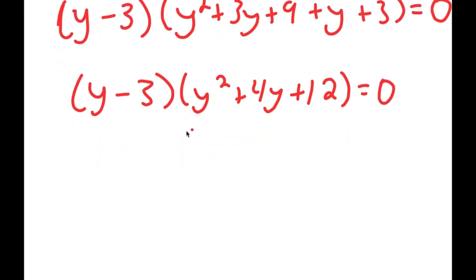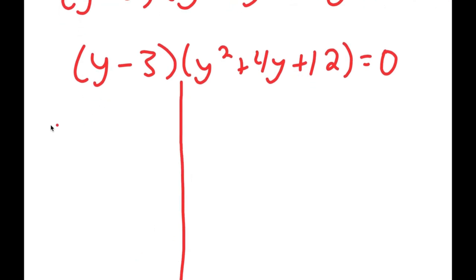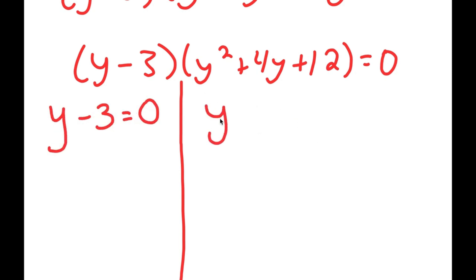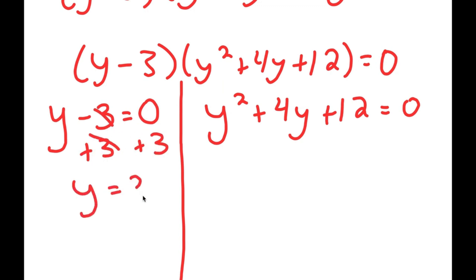So factoring gives y minus 3 equals 0. For this first equation, all I have to do is add 3 to both sides and I get y equals 3.